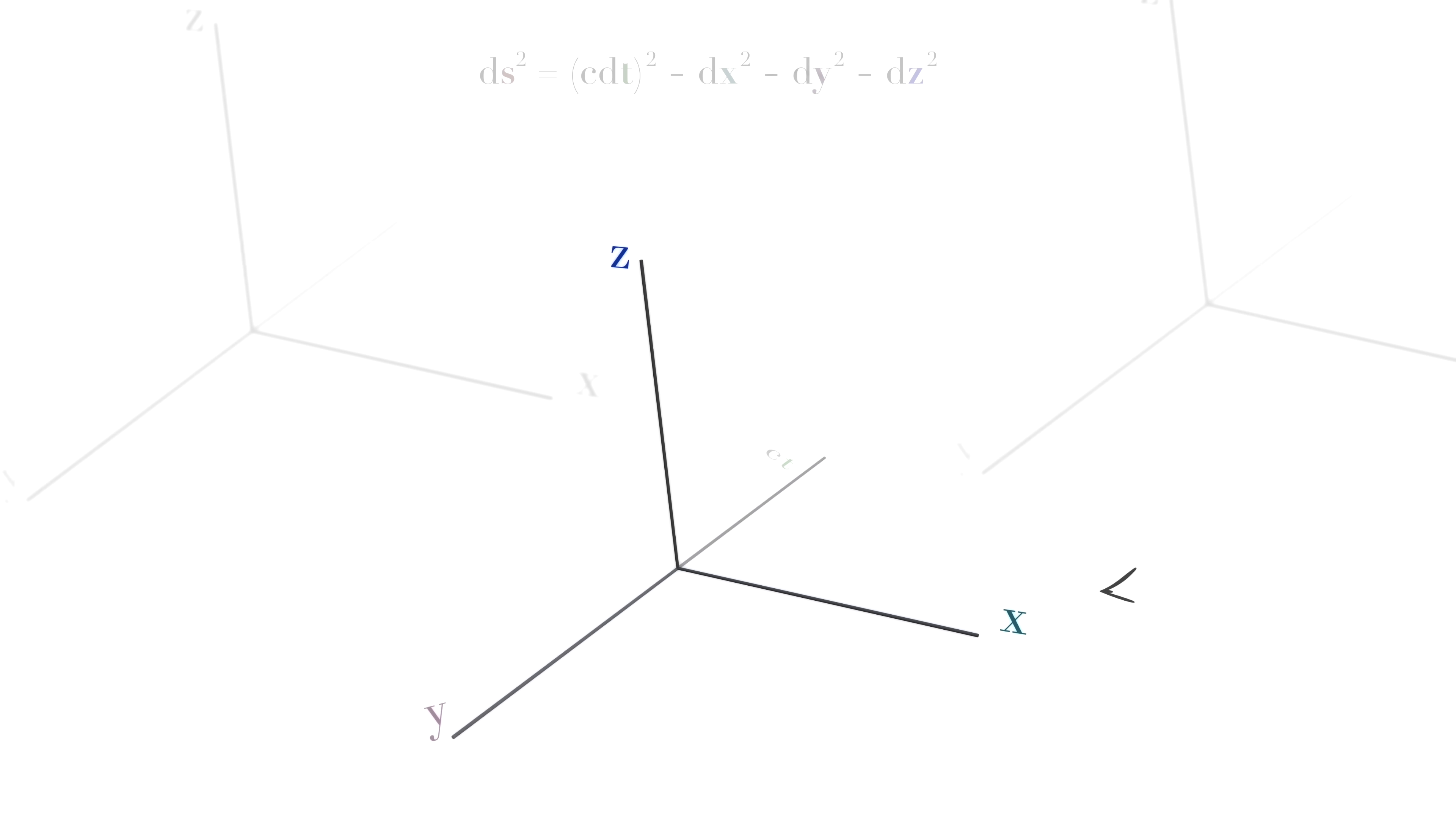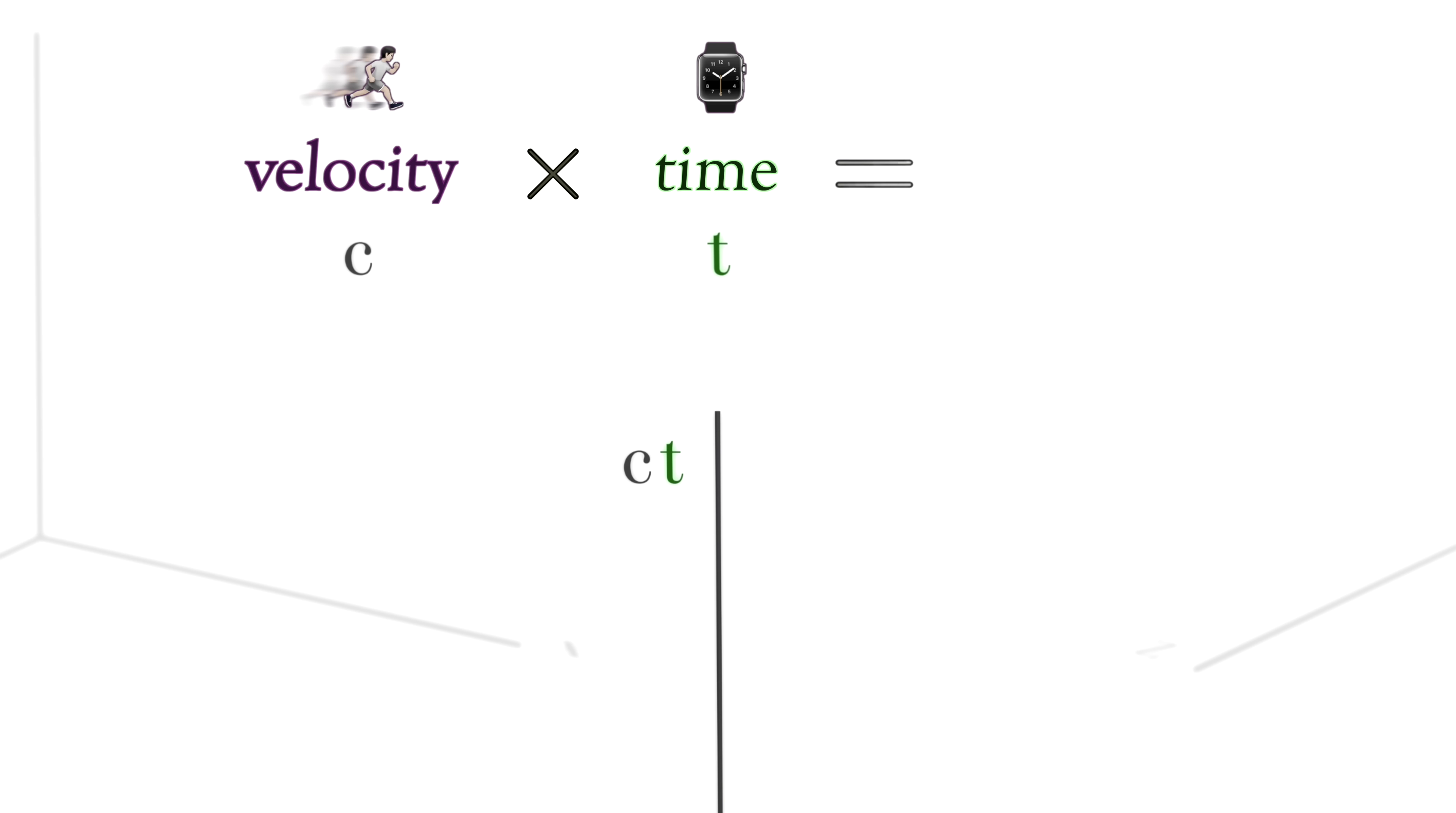And this fourth axis of the manifold here is not t, but ct. Well, c is a velocity, and t has units of time, and a velocity times a time equals distance.